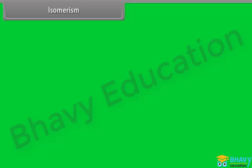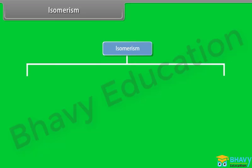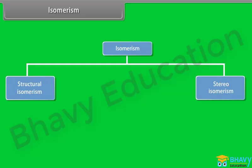Isomerism is the existence of sets of two or more compounds with the same molecular formulas but different configurations and hence different properties. The compounds are called isomers.